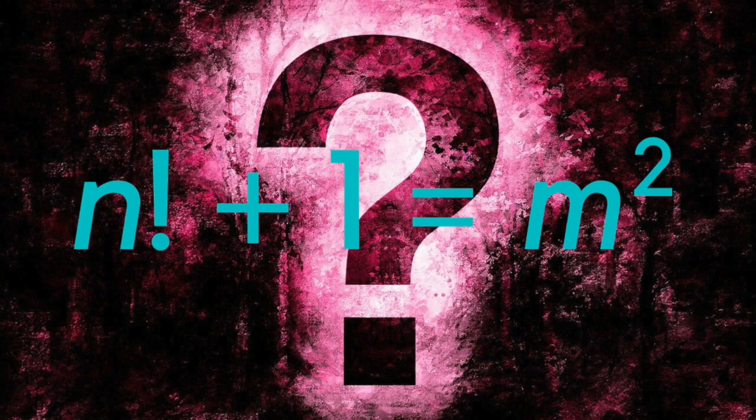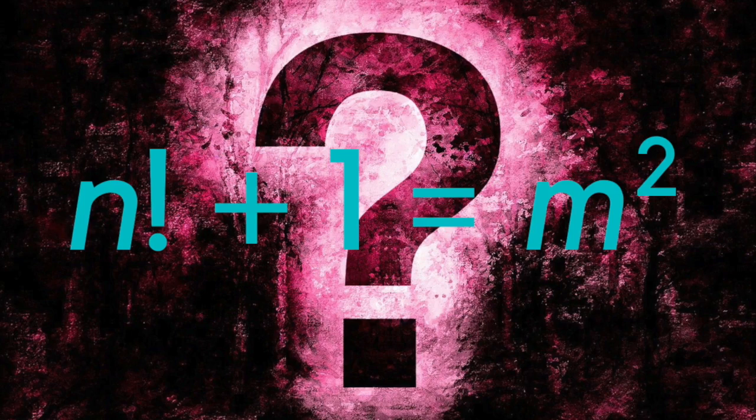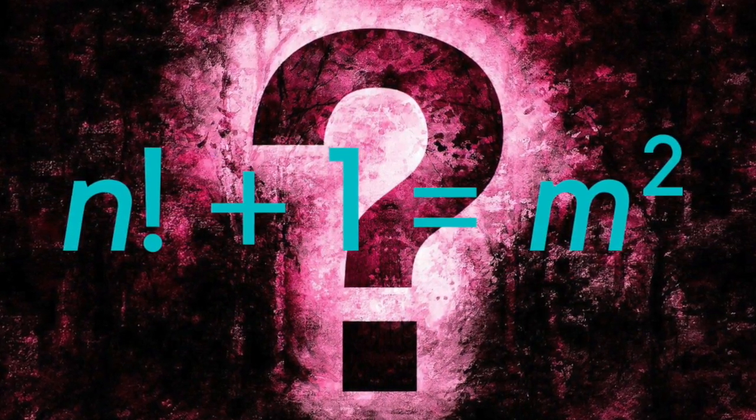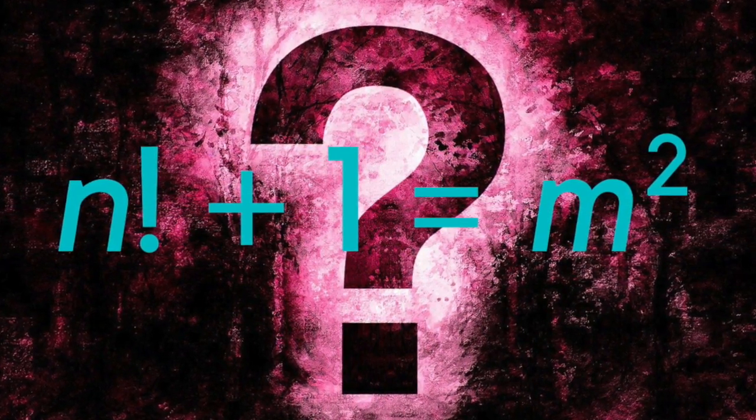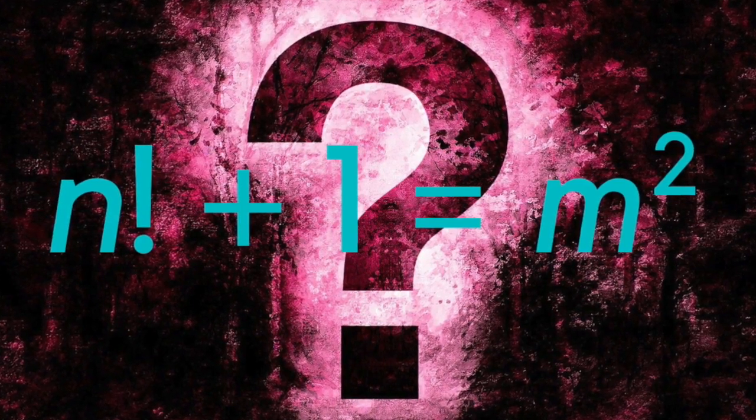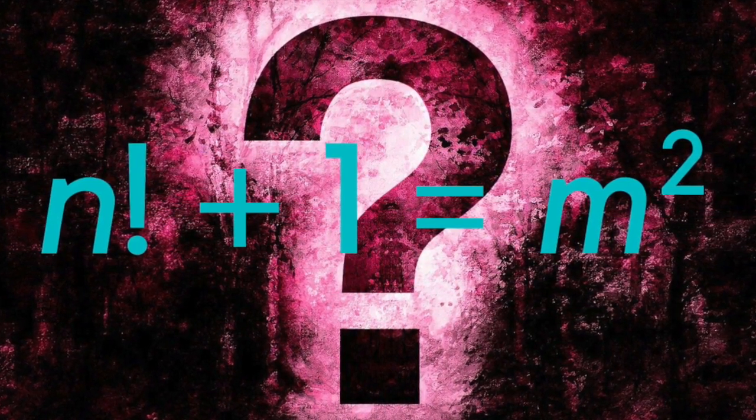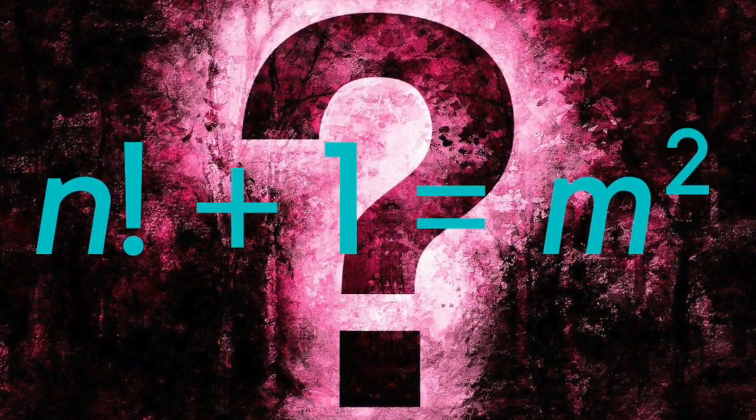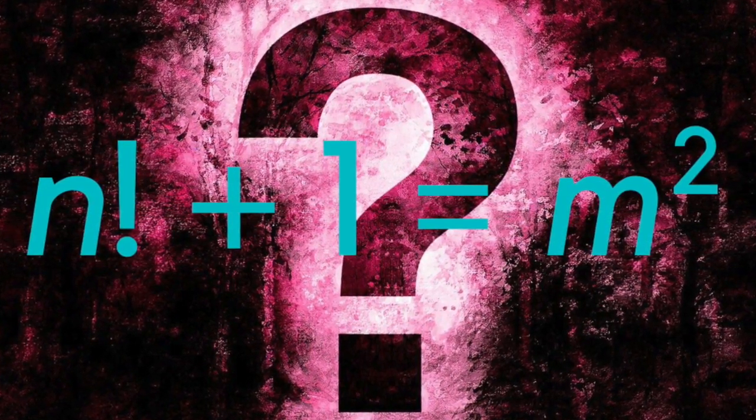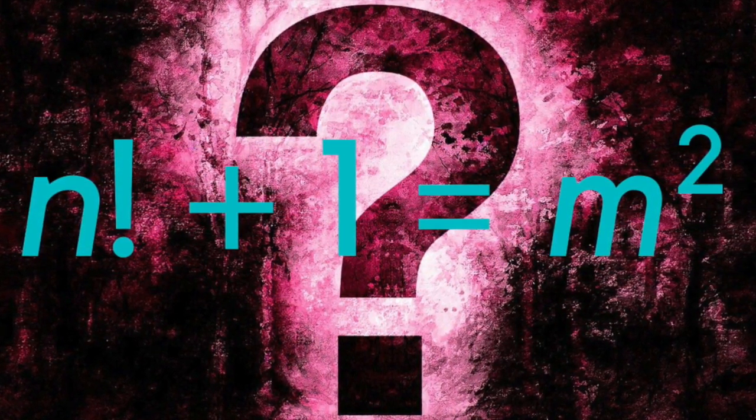We might be tempted to conclude that if there are no more solutions to the Brocard-Ramanujan problem than the three already known, for n up to a billion, then very likely that's it, and there just aren't any more. But that doesn't constitute a proof. There are examples in mathematics of conjectures holding true up to some immense value, and then suddenly failing. We're reminded again that in maths, proof is king, and the Brocard or Brocard-Ramanujan problem remains open until proved otherwise.